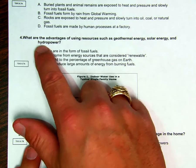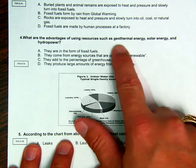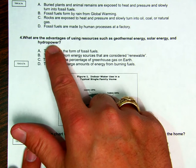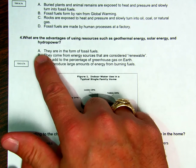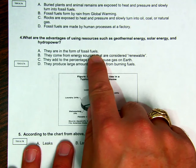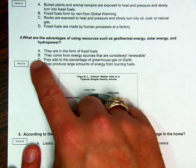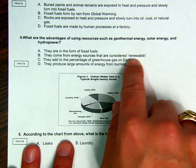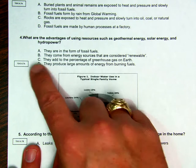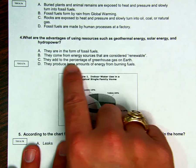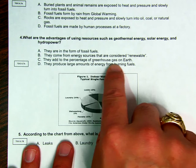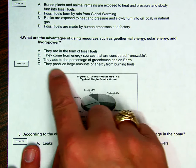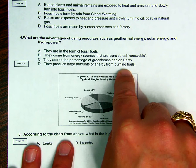Number four, what are the advantages of using resources such as geothermal energy, solar energy, and hydropower? Is it A, they are in the form of fossil fuels? B, they come from energy sources that are considered renewable? C, they add to the percentage of greenhouse gas on earth? Or D, they produce large amounts of energy from burning fuels?